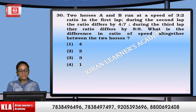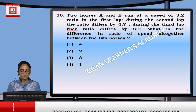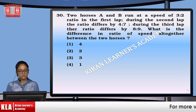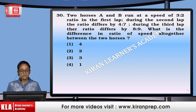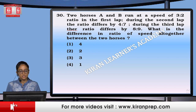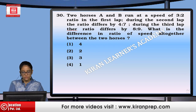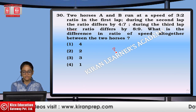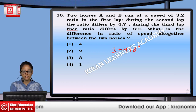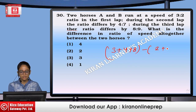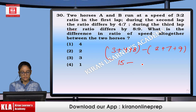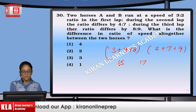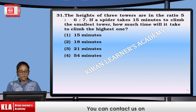Two horses A and B run at a speed ratio of 3:2 in the first lap, 4:7 in the second, and 8:9 in the third. The overall ratio of horse A: 3+4+8 = 15 and horse B: 2+7+9 = 18. The difference between the two totals is 18 minus 15 = 3... that is option 2.